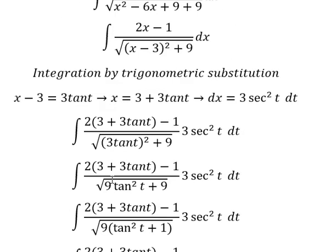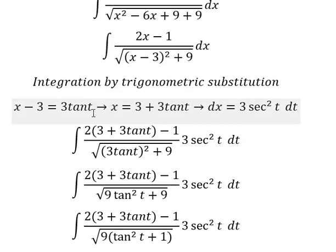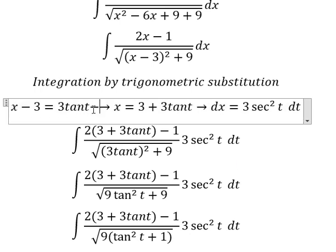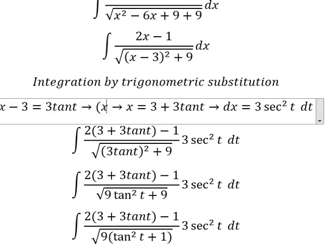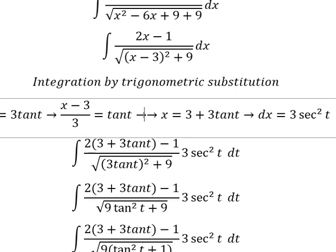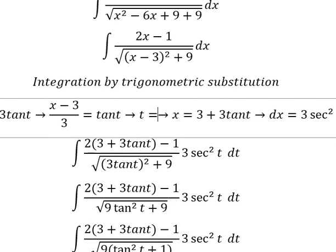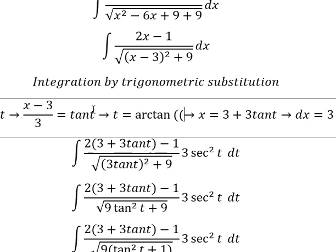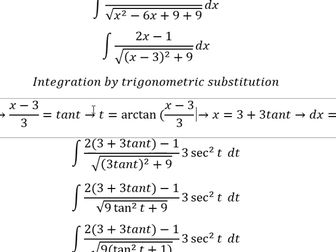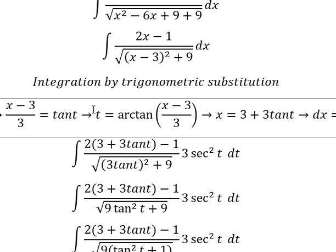Now for t, we use the substitution. We divide both sides by 3, and we get t equals arctan of (s minus 3) over 3. So we substitute this back in to replace t.